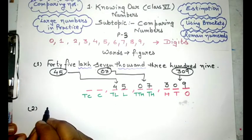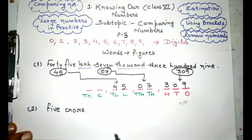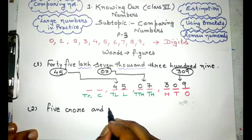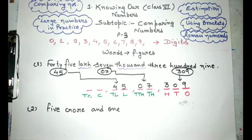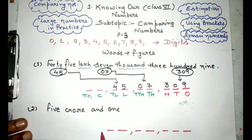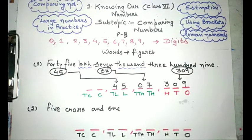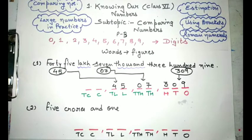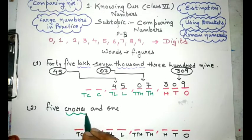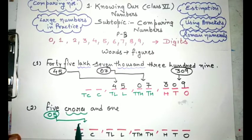Say you have got a number as 5 crore and 1. As we can see that there is only one visible group, that is crore, we will write 5 as 05 or 5 and place it in the crore group.